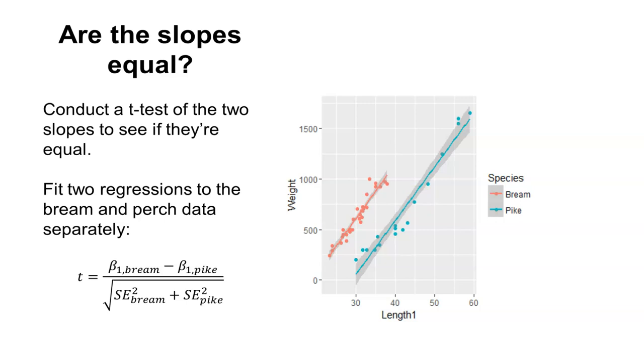So to conduct a slope test that assesses whether or not those slopes are equal, we can conduct a t-test. So what we have to do is we have to fit two regressions to the two different datasets. That is, we need to take the fish data and then filter it to get the bream dataset and then a pike dataset, and then do two separate regressions. The values that we need are the slope values. So we'll take the slope value from the bream simple linear regression, represented by beta 1, and the slope value from the pike simple linear regression. Again, that's beta 1.